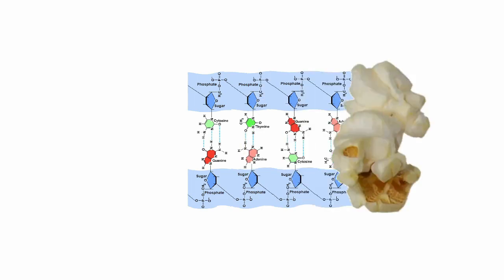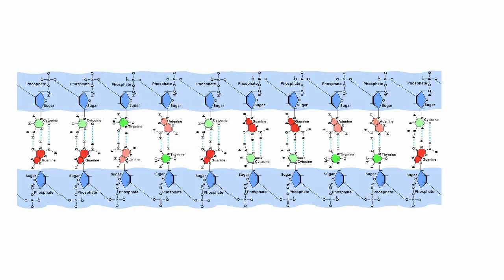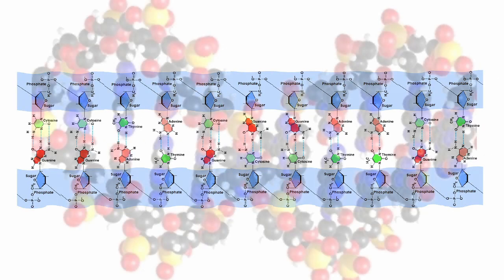The DNA molecule, the code in every one of our cells, how to manufacture, maintain, and operate the human body, is 6.4 billion base pairs, or binary letters, long.